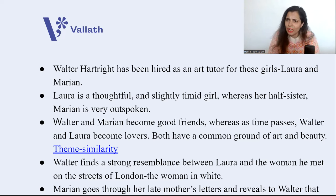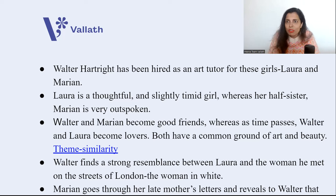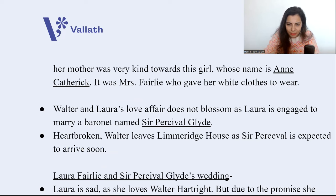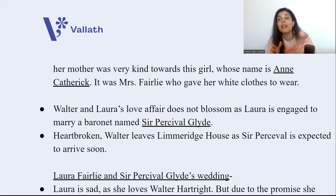One thing Walter finds very striking is a strong resemblance between Laura and the woman he met on the streets of London — the woman in white. When Walter tells Marion this, Marion quickly goes through her late mother's letters and reveals to Walter that this girl in white is indeed Anne Catherick, a girl who stayed very near Limeridge House and was very close to their mother, Mrs. Fairley. Mrs. Fairley was a teacher, and Anne would study at her school. Mrs. Fairley loved Anne and gave her white clothes to wear — that is how Anne got those white clothes.